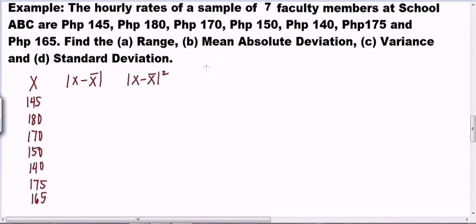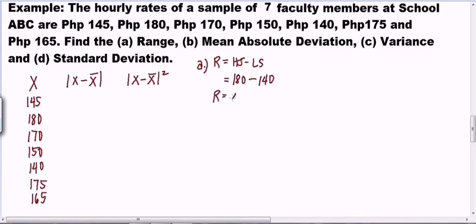Let us compute the range first, since the formula for range is very simple: range is equal to highest score minus lowest score. The highest score in this data set is 180 and the lowest score is 140. So the range is 180 minus 140, which equals 40.